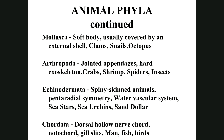Echinodermata — 'echino' means spiny, 'derma' means skin — spiny-skinned animals. They are penta-radial, meaning five branches from the center, and have a water vascular system for movement. Examples: sea stars (five arms), sea urchins (spiny balls), and sand dollars. If a sand dollar is fuzzy it still has its spines — if smooth, the organism is dead and spines have fallen off.